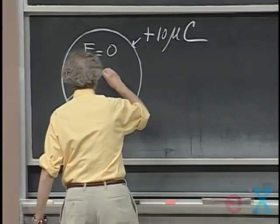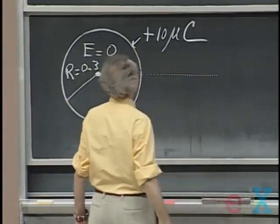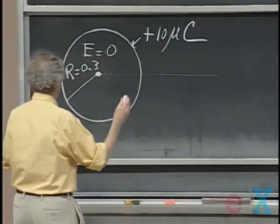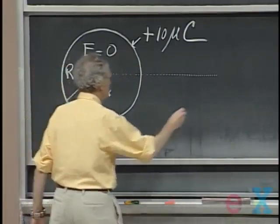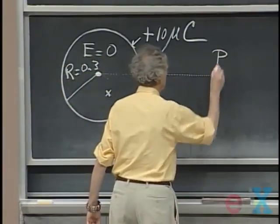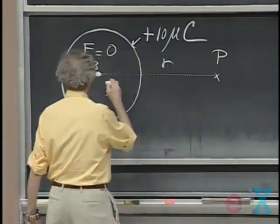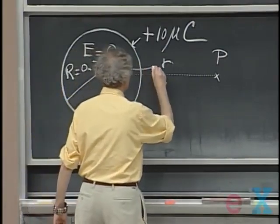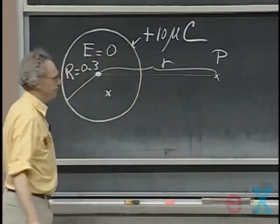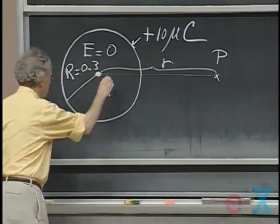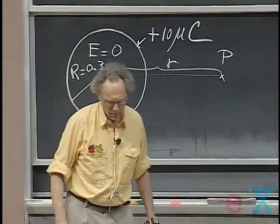And so now I want to know what the electric potential is at any point in space. I want to know what it is here, and I want to know what it is here at point P, which is now a distance R from the center. And I want to know what it is here at a distance little r from the center.